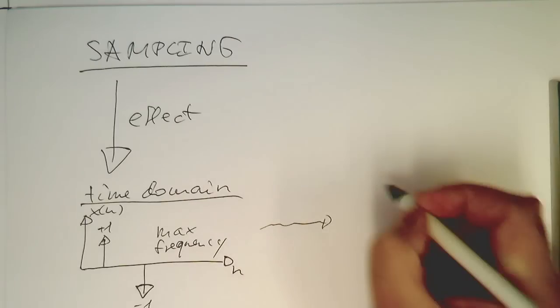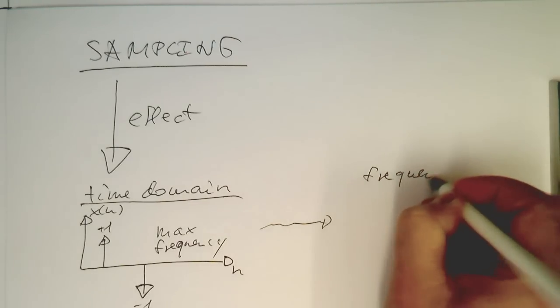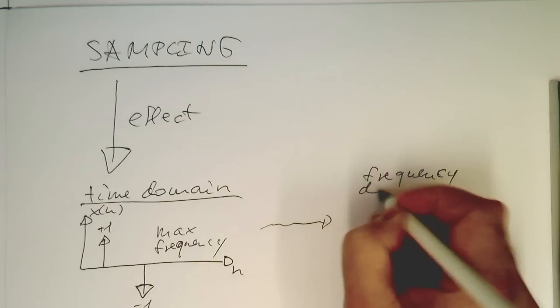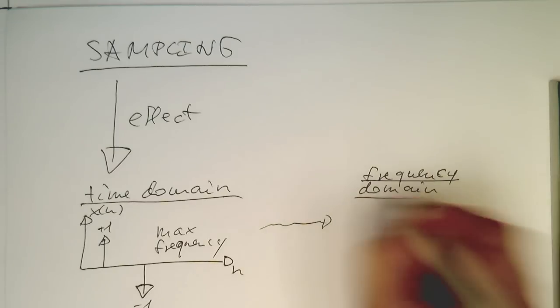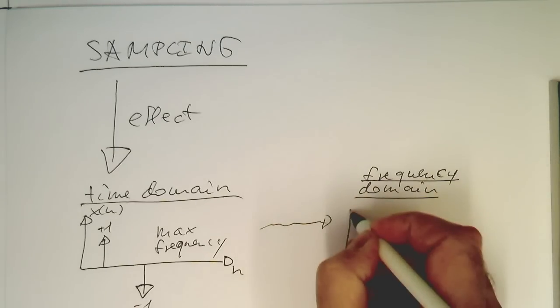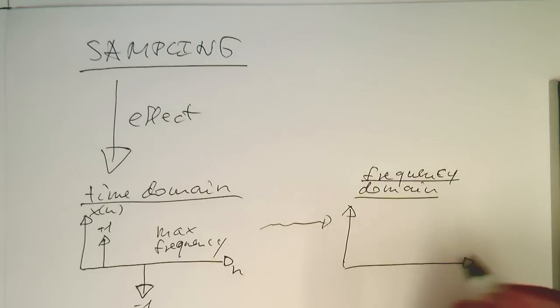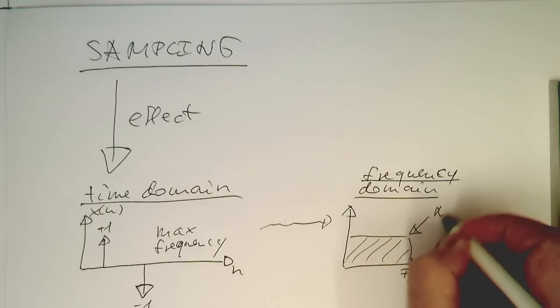So then we realized that we have an effect on the frequency domain. And there we realized that we have a maximum frequency here, so if you're hitting F_s/2, all our frequencies have to stay in here. And so we have here the so-called Nyquist frequency.